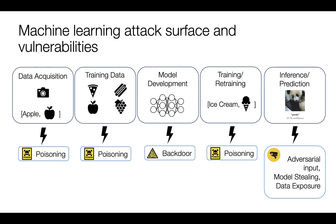When looking at the entire attack surface and vulnerabilities, we can examine the entire pipeline and the types of attacks available. There's data acquisition, which we can poison — essentially creating a situation where images being captured are not correct. You can alter what something is representing, which is important in things like autonomous cars, where you can alter images so the car thinks it's seeing a stop sign.